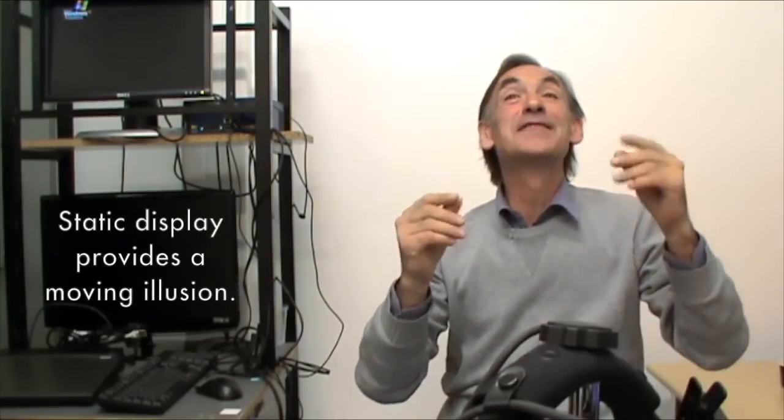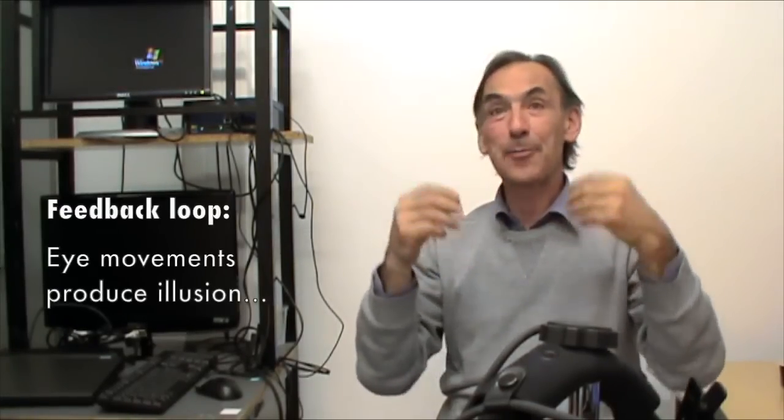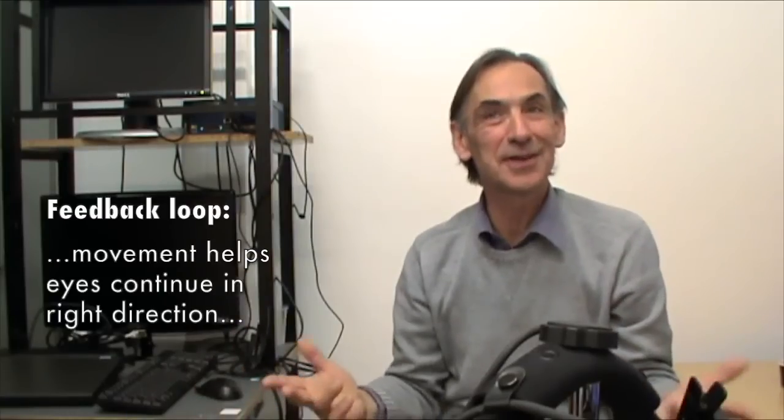But if you move the eye, it provides you with a visual illusion, a moving illusion which goes with the eye. So then you enter a kind of feedback loop in which action, eye movements, are producing a visual illusion that goes in the direction of the eyes and which helps you to move the eyes into the good direction. So this is really like a donkey following a carrot.